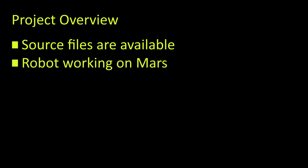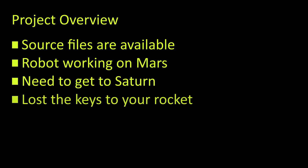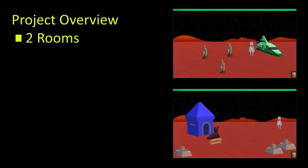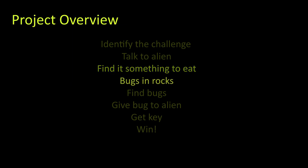The plan for this tutorial is to make a basic game to demonstrate the fundamentals of Escoria. The premise is that you're a robot working on Mars. You've just found out you're needed urgently on Saturn, but you've lost the keys to your rocket. The game features two rooms: the first has your rocket and some rocks, the second has more rocks and an alien creature. By talking to the creature, you'll find out it can make you a new key if you find it something to eat — Martian bugs found around the rocks. Find the bugs, take them to the creature, use your key, open the rocket, and you win.